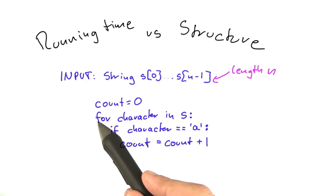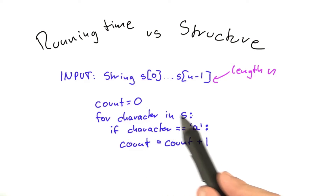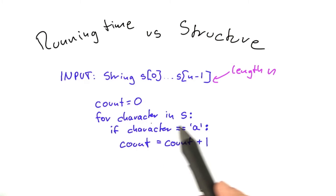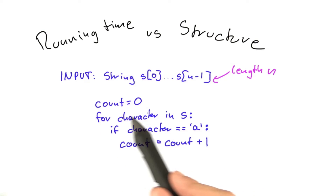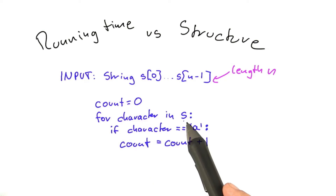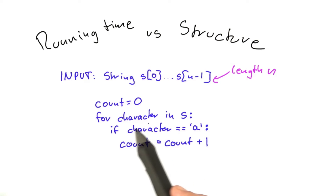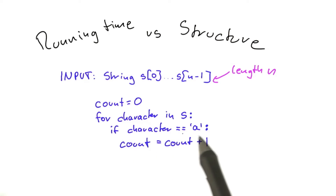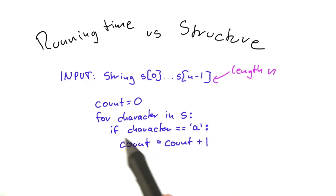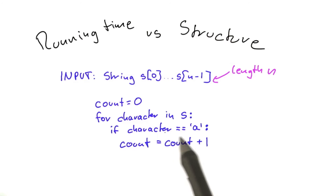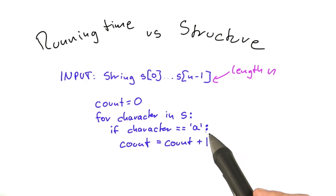As in the previous examples, we're going to take this line here as a simple operation, meaning it takes one time step each time it's executed. And we're also going to consider this other line here a simple operation, meaning this whole line is also going to take one time step each time it's executed.